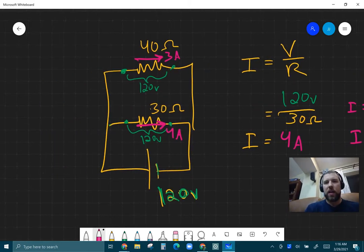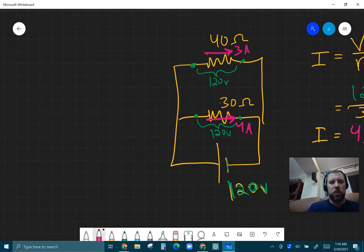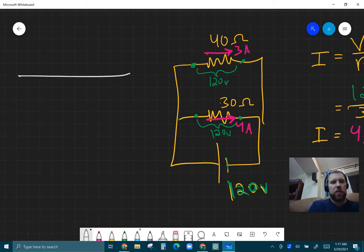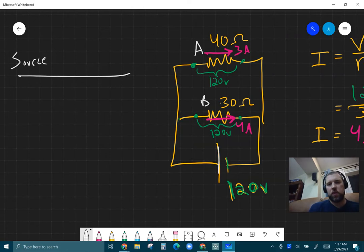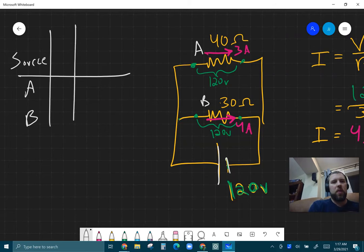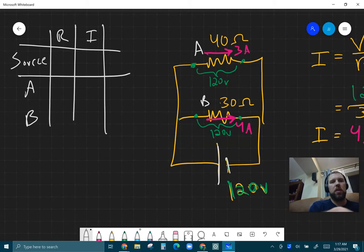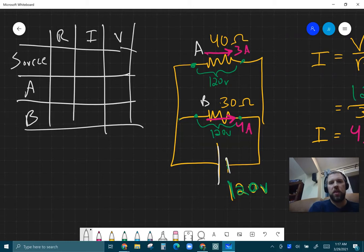So if I want to keep track of this, a lot of times we use a table to do that. So we have, if we named these like resistor A and resistor B, we have the source, which is the voltage source down here. We have resistor A, we have resistor B, and we'll keep track of it in total resistance and current and voltage. So if I'm keeping track of this here, A was 40 ohms, B was 30 ohms.